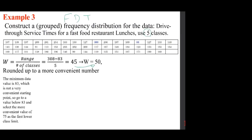We have five classes. So the class width is the range divided by the number of classes. We can start with 80 or even 75. The largest value, 308, must be included at the end — if it's not, something is wrong. A lot of choices here are up to you.